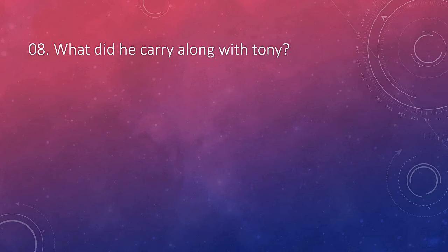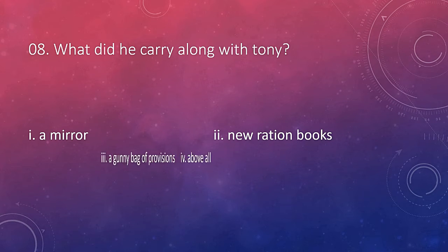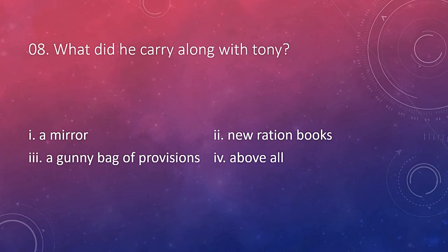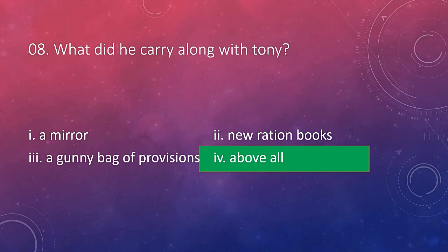What did he carry along with Tony? The options are a mirror, narration books, a gunny bag full of provisions, or above all. The answer is above all. Though he is a small boy, he carries a huge amount of things with him. This tells about his character and how much he needs to bring Tony back — he carries all those burdens without any complaint.